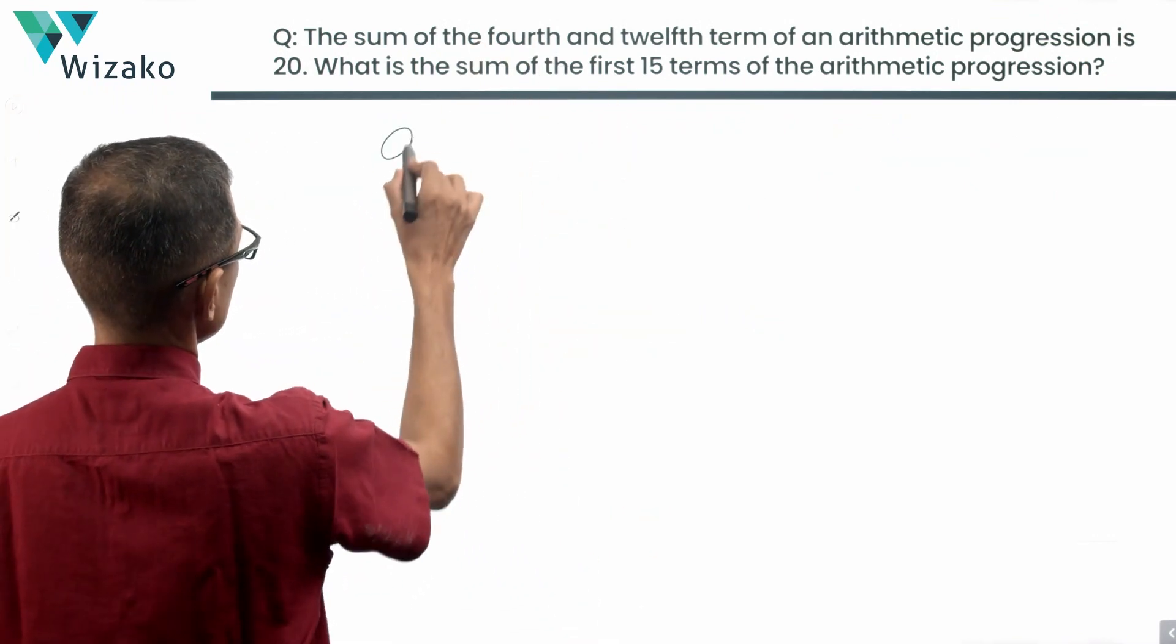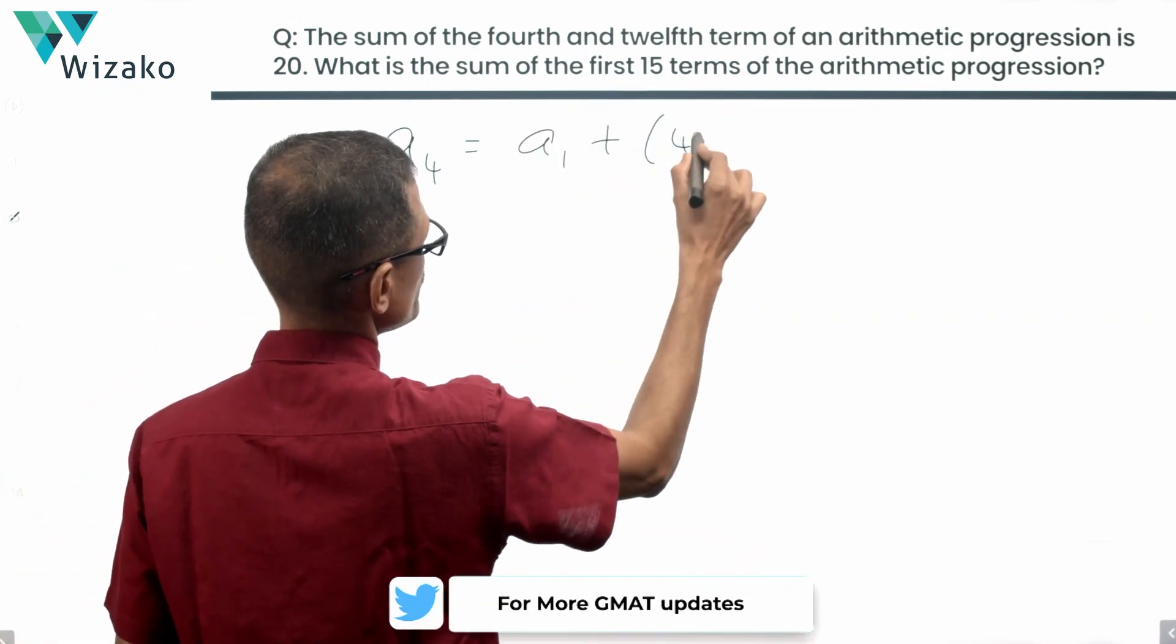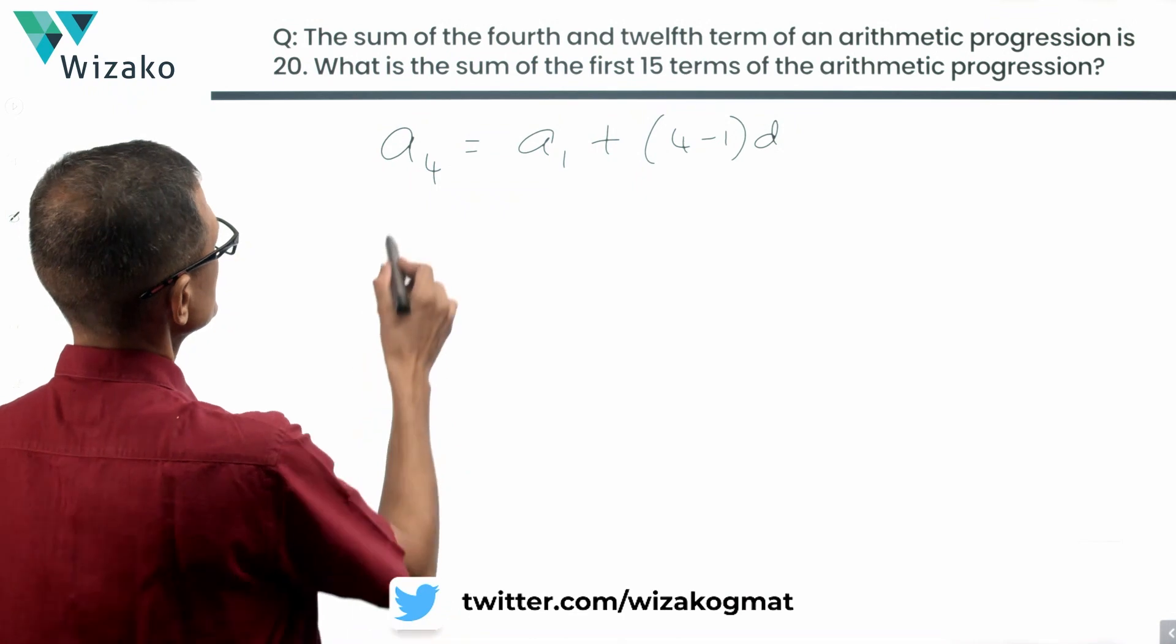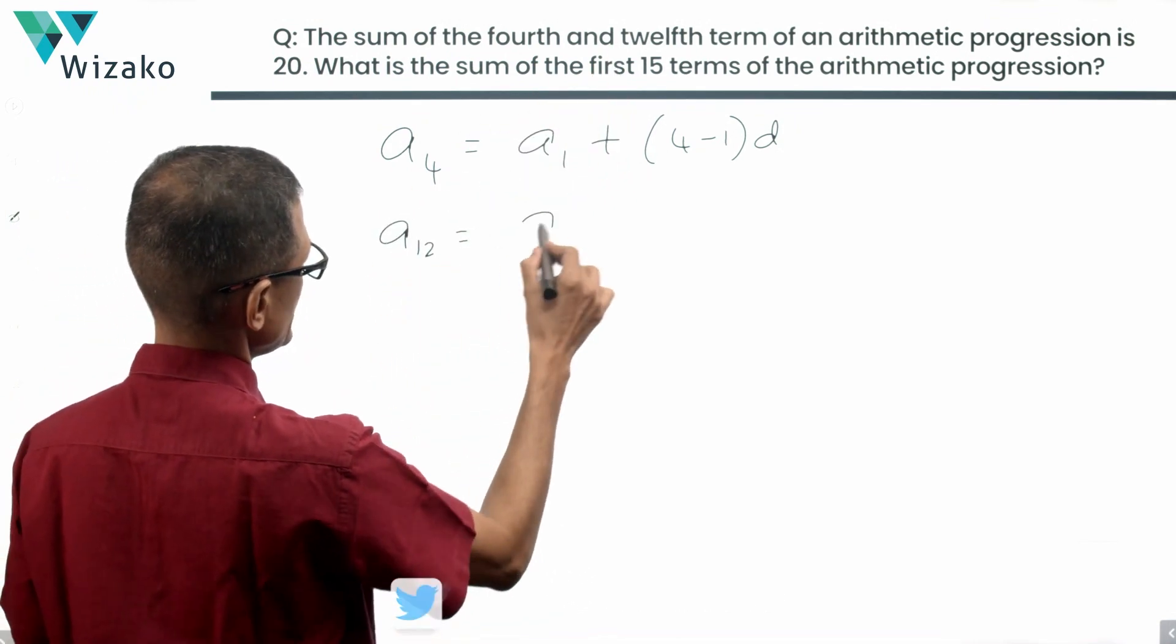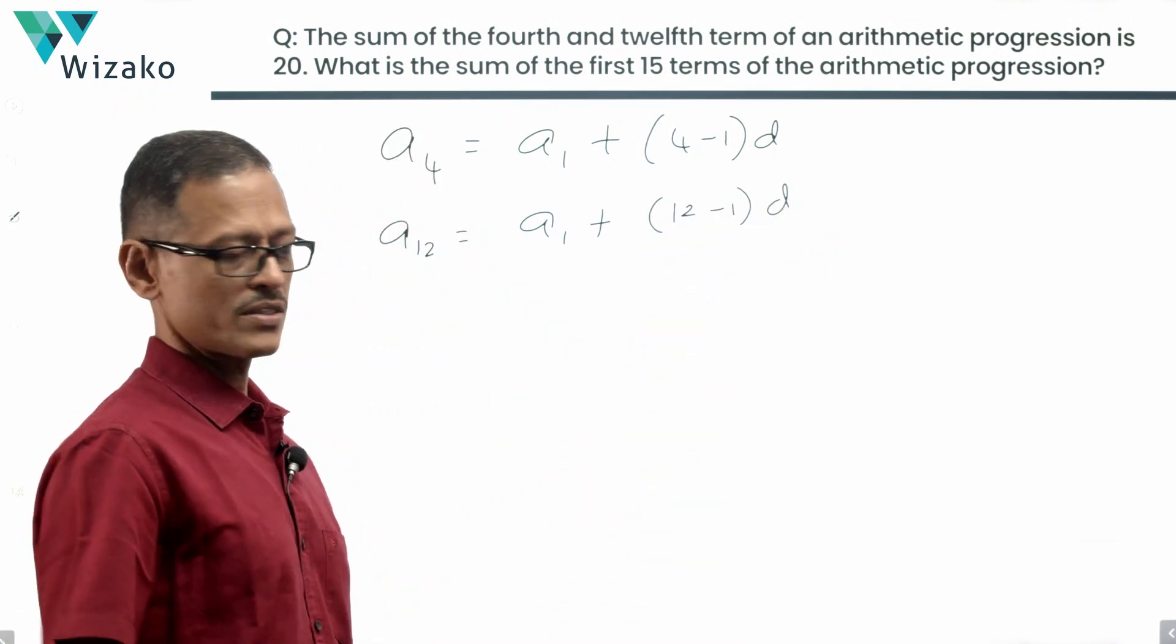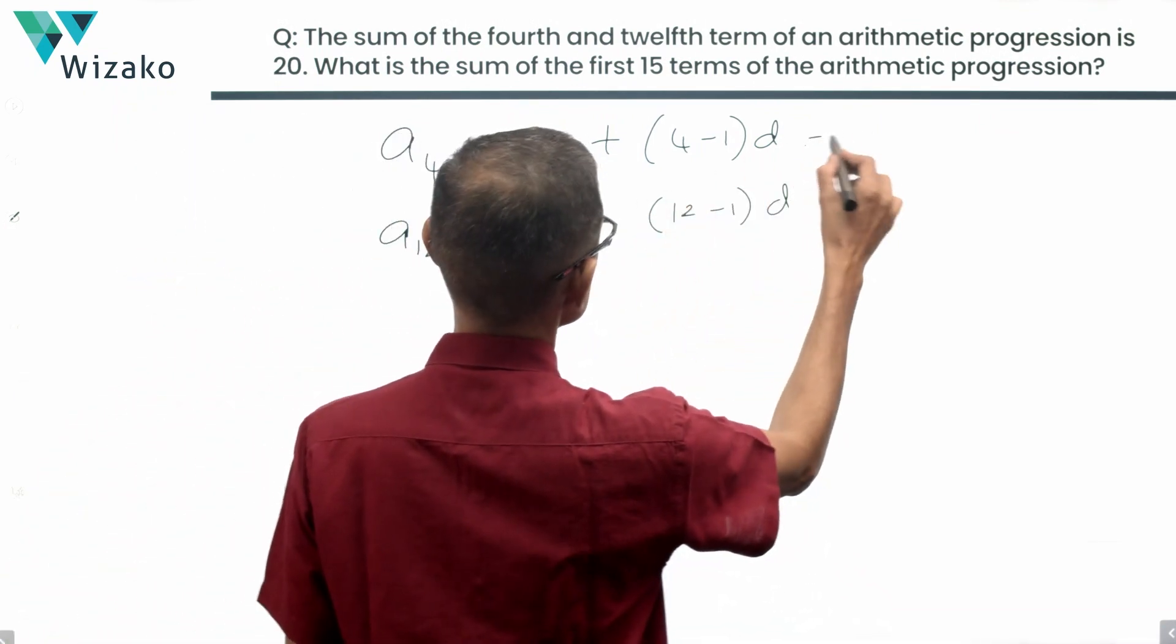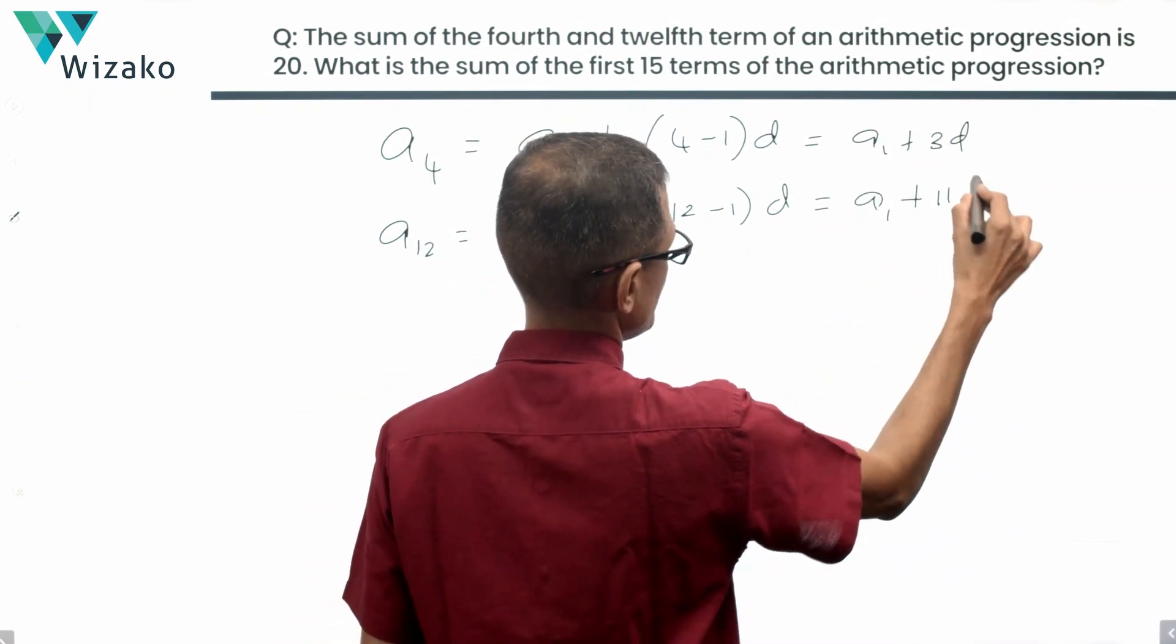The fourth term, A4 by the Nth term formula is A1 plus 4 minus 1 times the common difference. This essentially can be written as A1 plus 3D. This is A1 plus 11D.